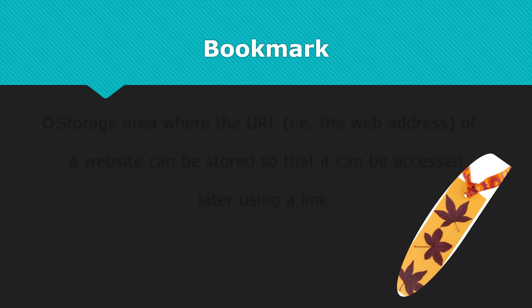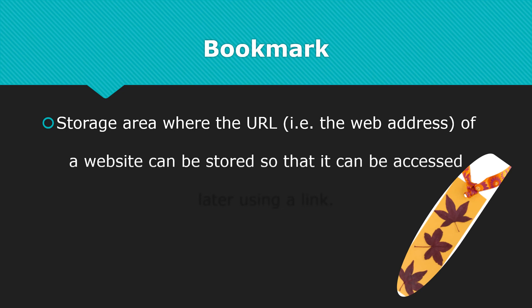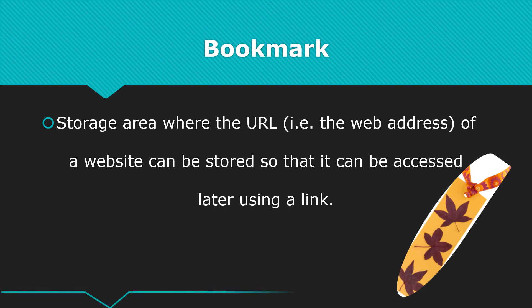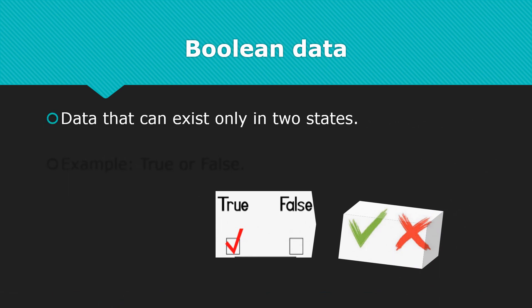Bookmark is a storage area where the URL or web address of a website can be stored so that it can be accessed later using a link. Boolean data is data that can exist only in two states or two values, for example, true or false.